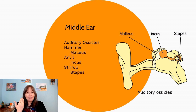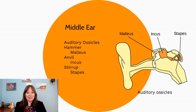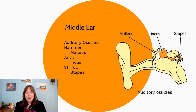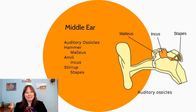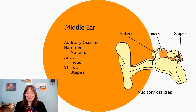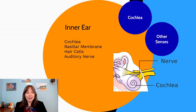After the eardrum vibrates, it sets into motion a domino effect with the three auditory ossicles. The auditory ossicles are small bones often called the hammer, anvil, and stirrup, but they can also be called the malleus, incus, and stapes respectively — named based on their shapes. The malleus vibrates, which causes a domino effect in the incus, which causes a domino effect in the stapes. These are considered part of the middle ear, separate from the outer ear, so a middle ear infection means something different than an outer ear infection.